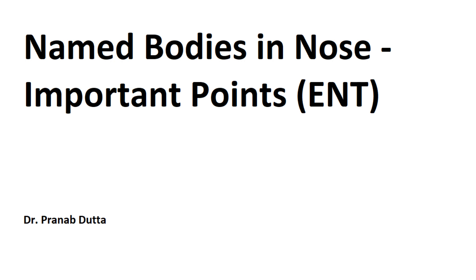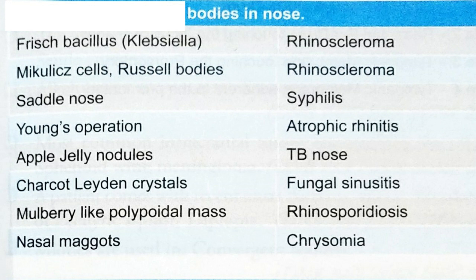The first one is Frisch's bacillus or Klebsiella, which is related with rhinoscleroma. The second one is Mikulicz cells or Russell bodies, also related with rhinoscleroma. Then saddle nose is related with syphilis, and Jung's operation is done for atrophic rhinitis.